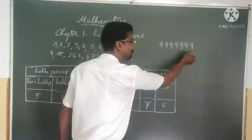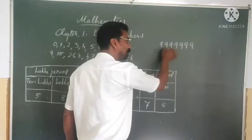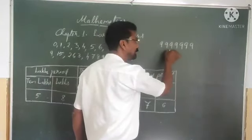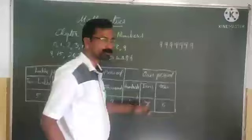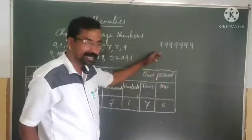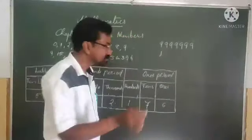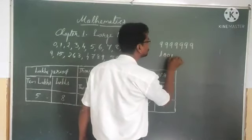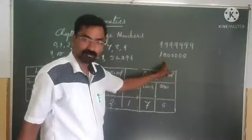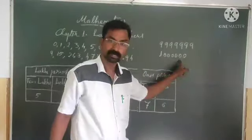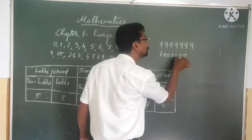Then you set the places: ones, tens, hundreds, thousands, ten thousands, lakhs, ten lakhs. When the number is read as 99 lakhs 99 thousands 999. So to make the smallest seven digit number, first write 1, then six zeros.